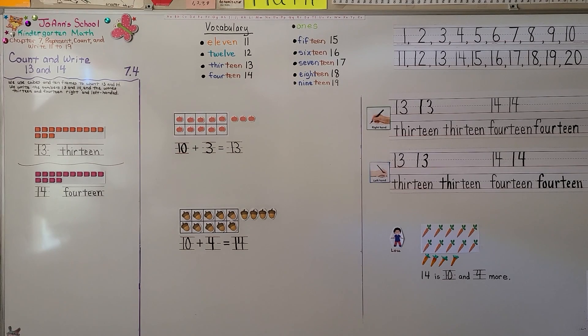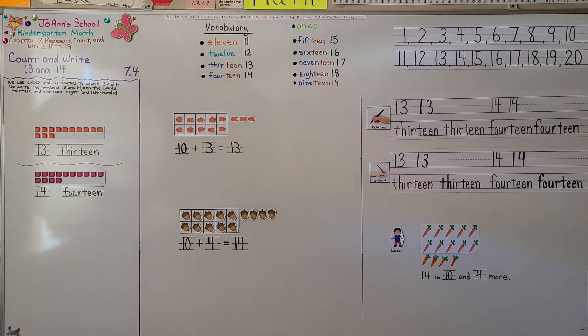You can practice writing 13 and the word thirteen and 14 and the word fourteen. And remember, 13 is 10 and 3 more. 14 is 10 and 4 more. In our next lesson, 7.5, we're going to model and count 15. I hope you're doing well and I hope you'll join me next time.